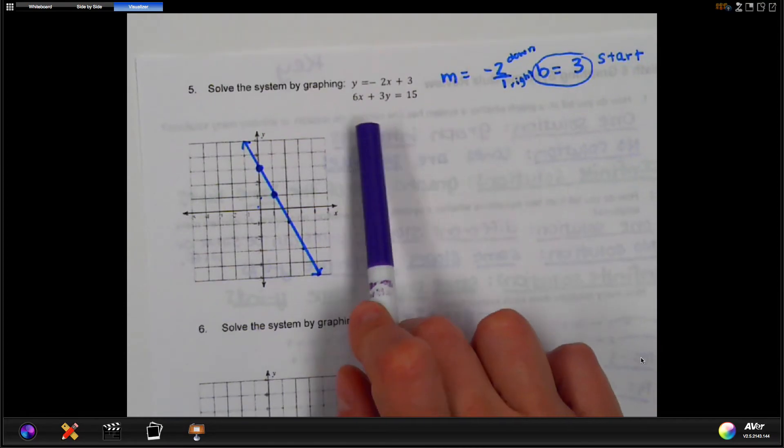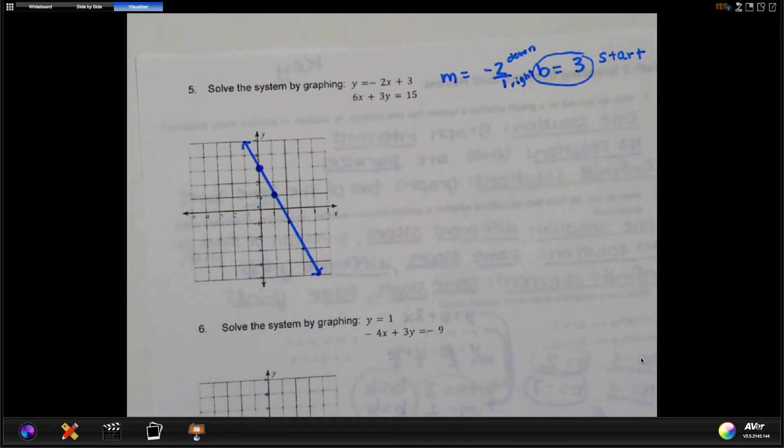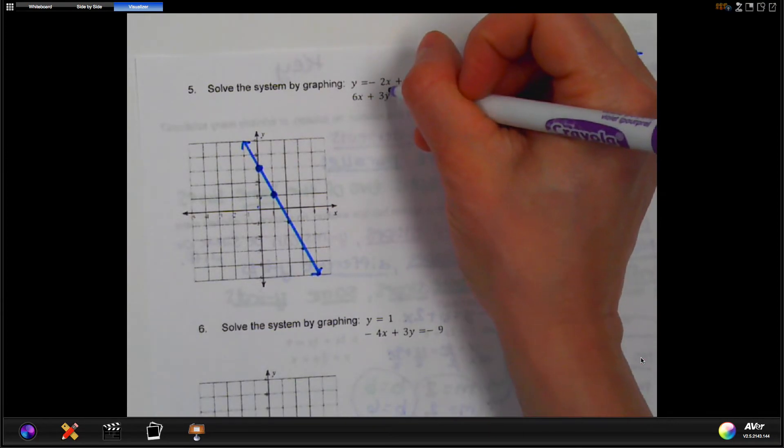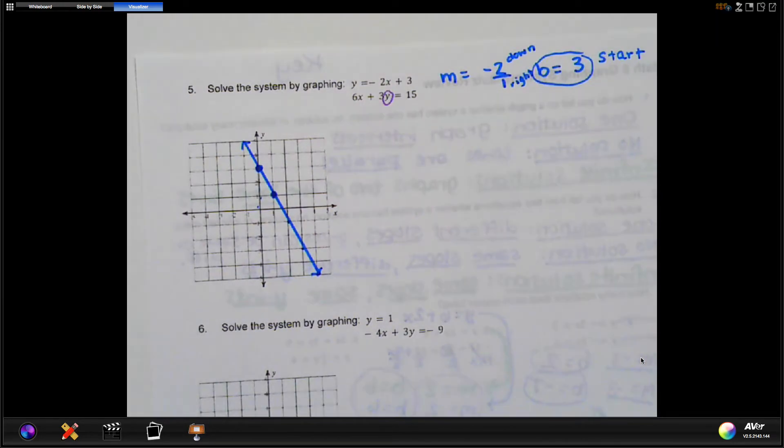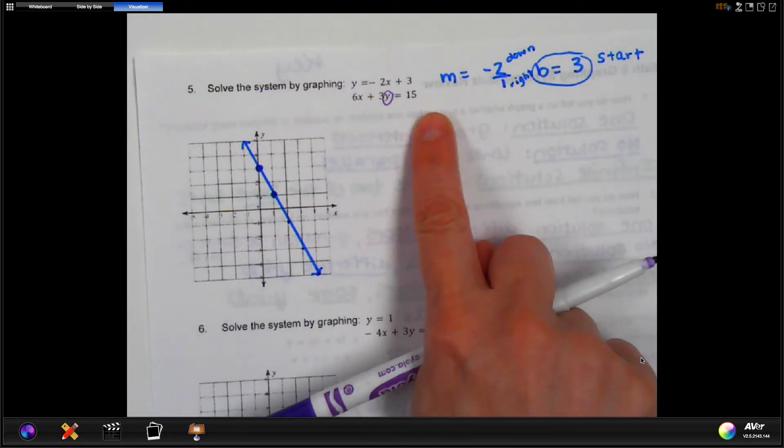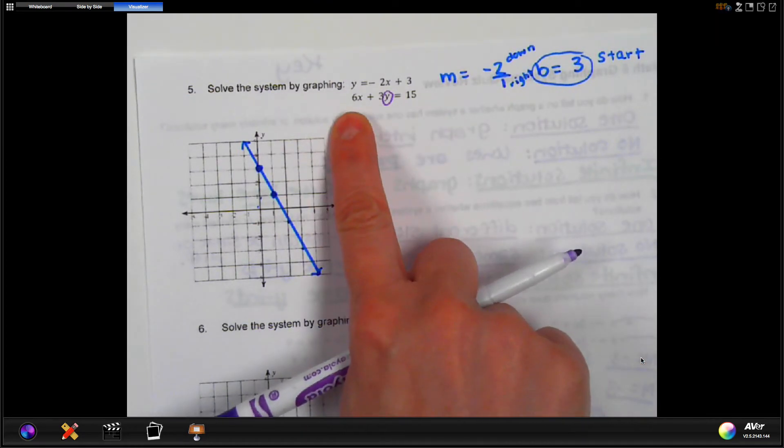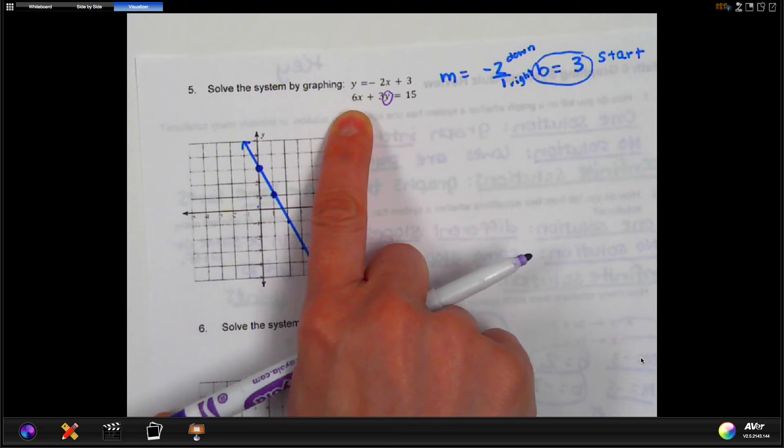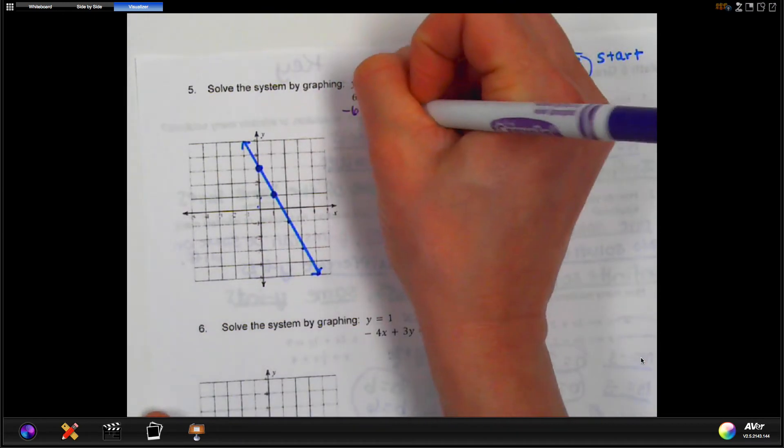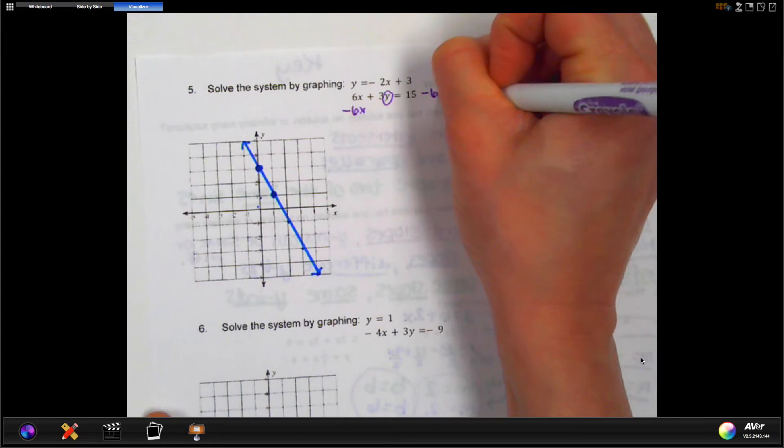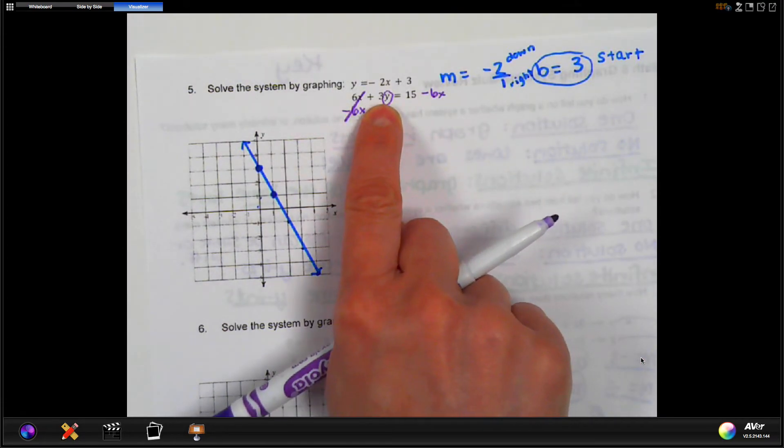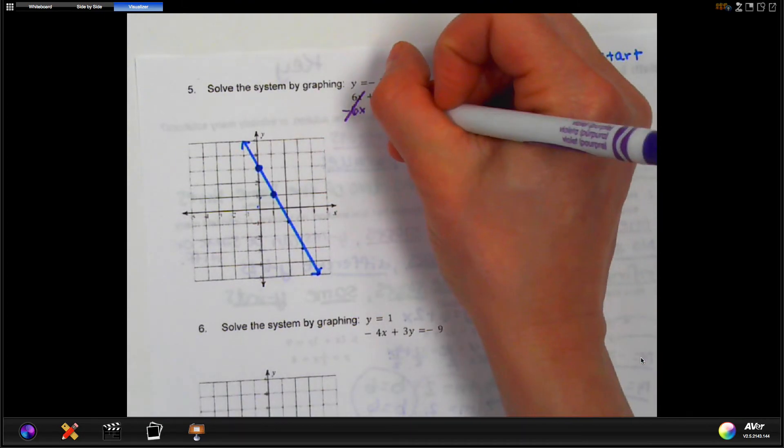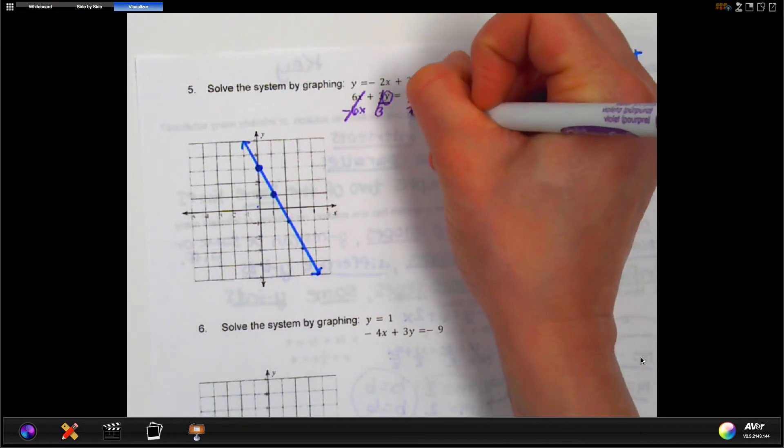Okay, this one is not in y equals. So just like we did on the examples from the front, we're going to get that in y equals. So y is claiming the left side of the equation, which means everything else needs to move to the right side. 15 is already there. Let's start with getting the 6x out. So opposite of 6x is minus 6x. Do that to both sides. And then opposite of 3y, remember that is multiplying by 3, so we want to divide by 3 and divide each of these by 3.